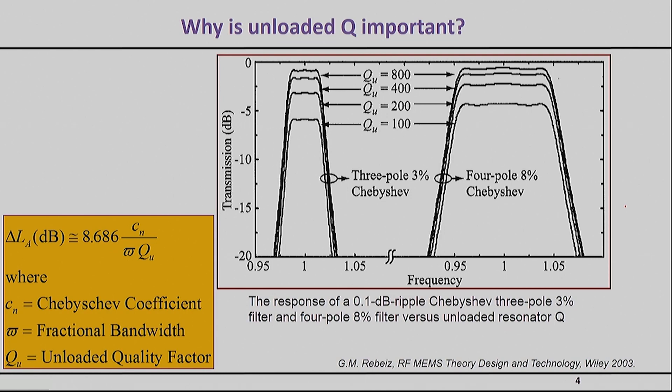The most important thing that you will notice is the insertion loss of your filter. The insertion loss is the loss that you will have in the passband of the filter. What is really important to keep in mind is that the worse your quality factor is for the resonator, the worse the insertion loss will become. Here are two cases: one is for a three-pole Chebyshev filter, the other is for a four-pole Chebyshev filter, and each one gives you the actual shape of the filter when built with resonators whose quality factors are degrading from 800 down to 100.